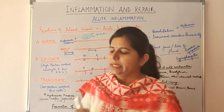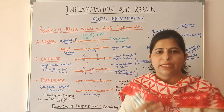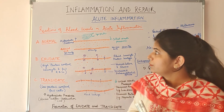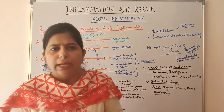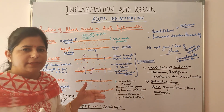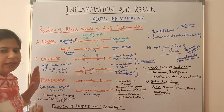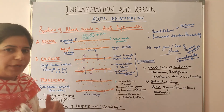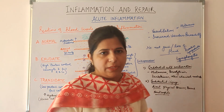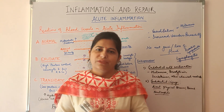This concludes the vascular response in acute inflammation. Next we will study the cellular response — leukocyte migration to the site of inflammation and the various steps involved. Before the cellular events, I will also discuss the differences between exudate and transudate point-wise. I hope you liked the lecture. Thanks for watching.